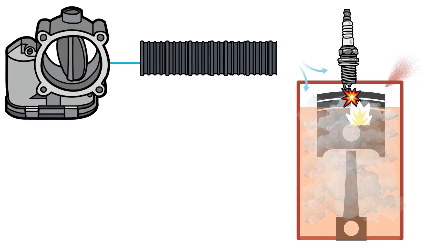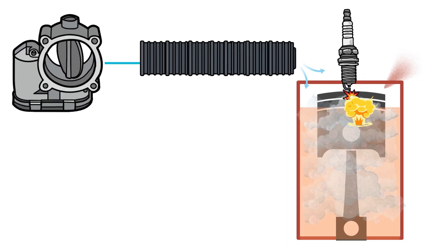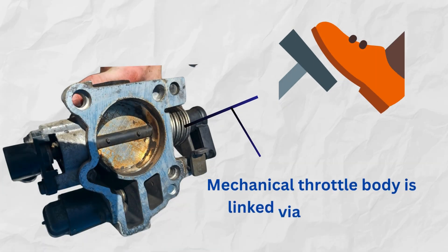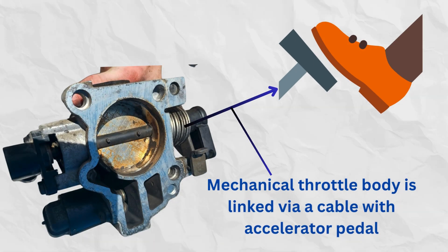The throttle body is a crucial component that regulates and controls airflow into the engine. The mechanical throttle body is mechanically run by a cable linked to the accelerator pedal.